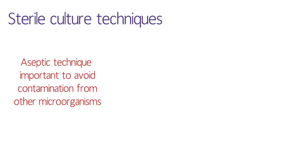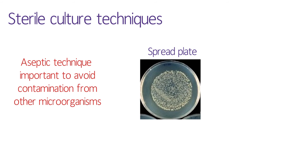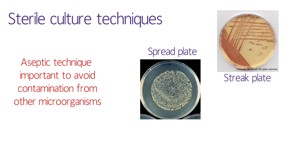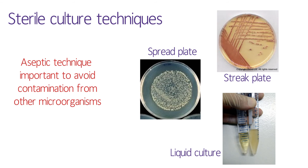In practical one you're going to set up three of the most common microbiology growth methods: spread plates, streak plates, and liquid cultures. In practical two we'll find out what's grown in those different cultures and try to work out the source of the contamination.